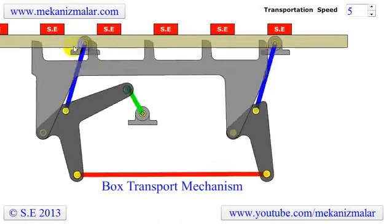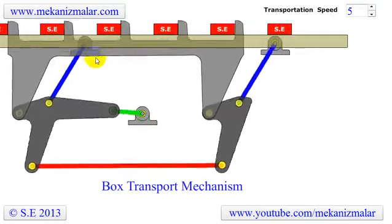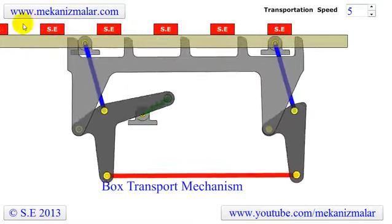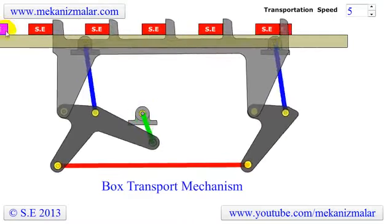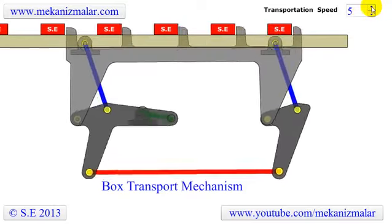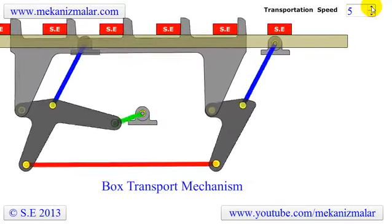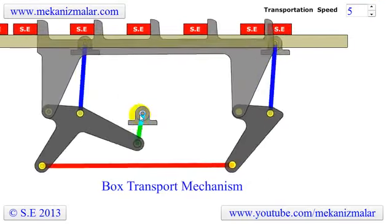Once these operations are completed, the box is pushed into a shipping conveyor system. The speed of the operation can be controlled by adjusting the speed of the motor powering the crank, shown here.